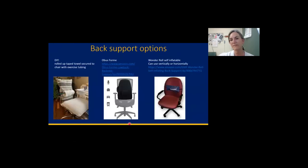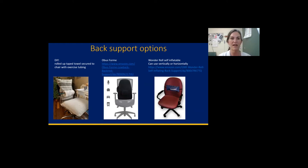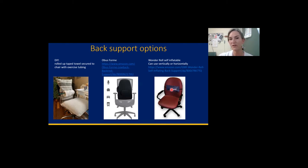Another recommendation I use in the clinic is called an Obus Form. There's a little round portion that can be removed and placed anywhere up or down on your chair. You could also use it in a car or on your couch if you're having back problems. Another option is called a Wonder Roll — it's self-inflatable and you can use it across the lumbar spine or vertically, and it has a little strap.